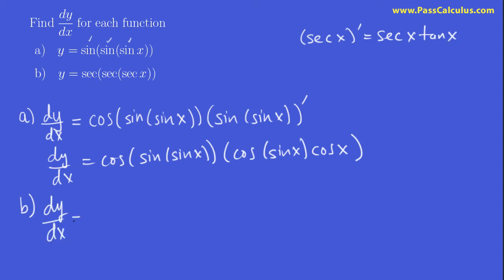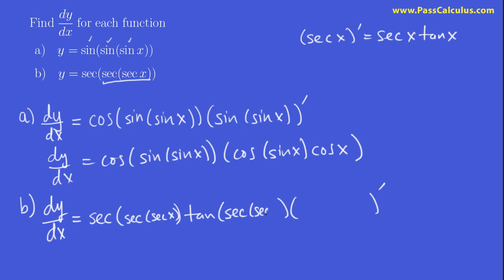By now you kind of have a feeling for what we're going to do. This is our part that we're going to ignore. The derivative of secant is going to be secant of this times tangent of that, times the derivative of this. So, secant of that times tangent of that times the derivative of that. And what is that? It's secant of secant x. Notice that now we only have two secants left — we've knocked off one of the secants.